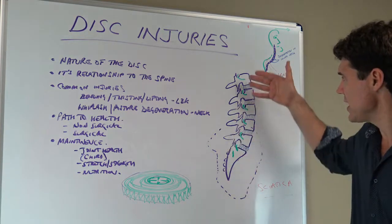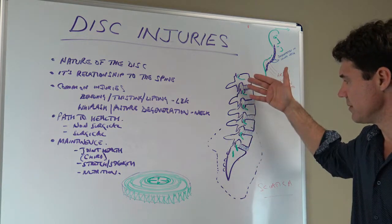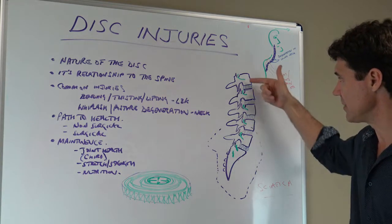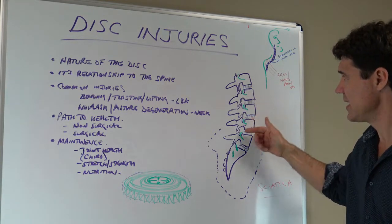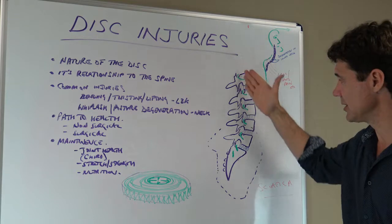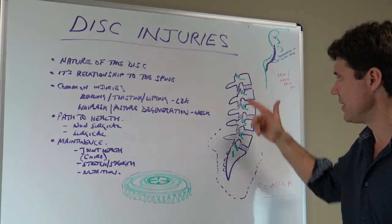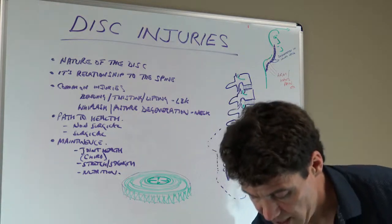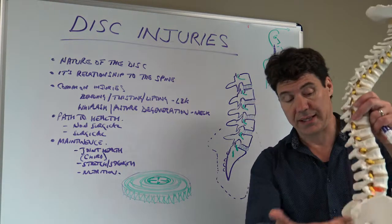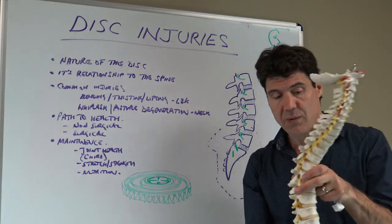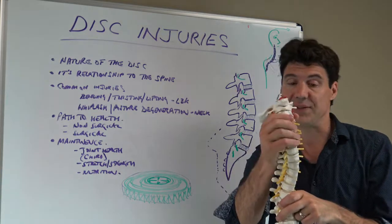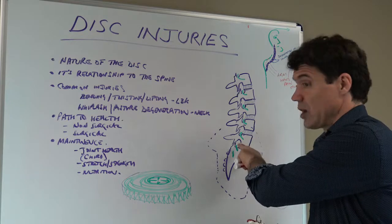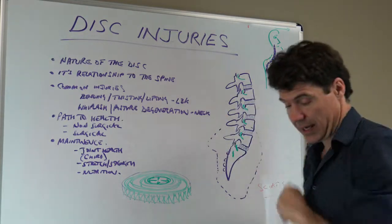You can see here we've got a low back version of the spine, where we've got a vertebrae, disc, vertebrae, disc, vertebrae, disc, spinal cord going down the middle, all the nerves coming out, joints in the back, and the bony bits that you can feel on the back of your spine. We also have discs throughout the spine and into the neck too, so we're going to be talking about discs not just in the lower back, but also as regards to the neck.